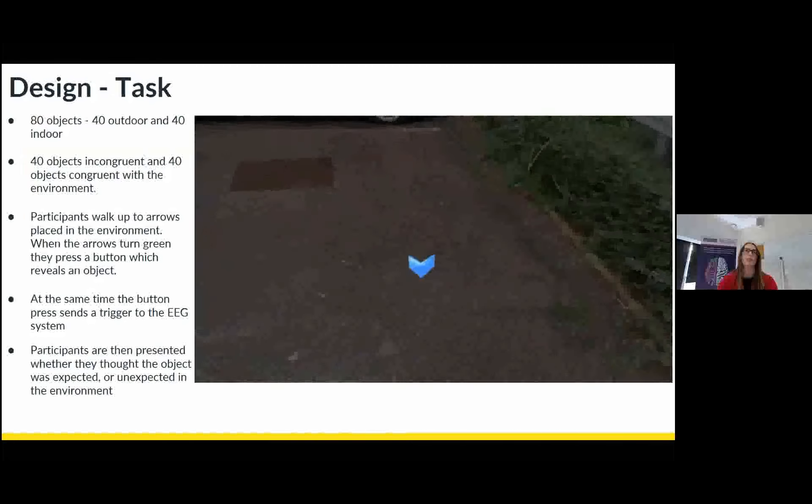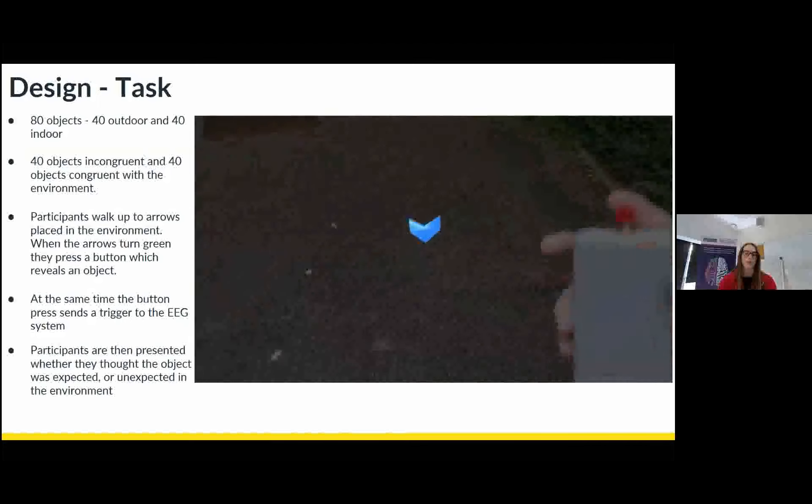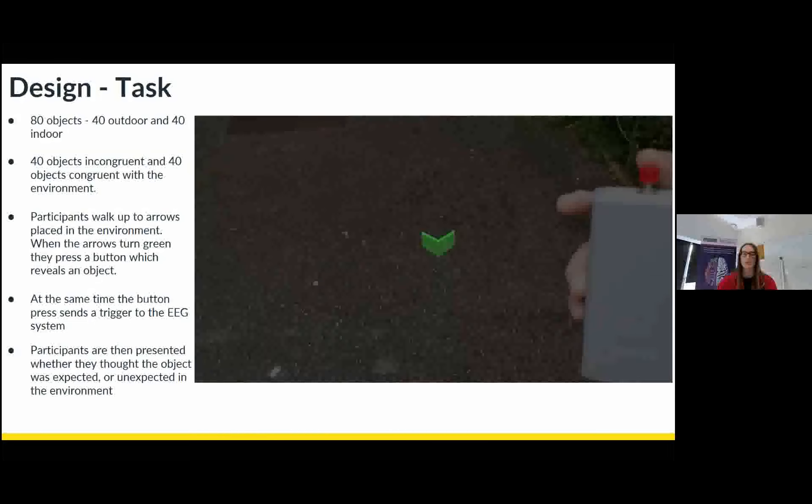So I'll just take you through our task. So what participants have to do is they have to find these arrows, which are placed around a couple of environments in our task. And when they get close enough to the arrows, the arrows will turn green, indicating to the participant that they need to press a button on the button box here. And when they press the button, it causes an object to be presented to them. And at the same time, it sends a five volt signal to the LiveAmp, which converts that into a trigger, which is marked in the EEG signal, allowing us to create an epoch around the period of time in which the object is presented.